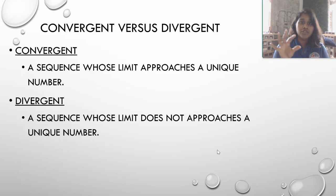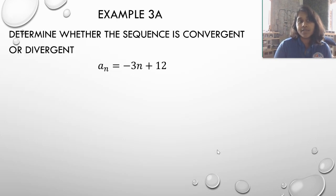So jumping right into convergence and divergence, a convergent sequence is a sequence whose limit approaches a unique number, and a divergent sequence is a sequence whose limit does not approach a unique number. Fun vocabulary, or we could see it for ourselves. So if I ask you to determine whether this following sequence is a convergent or divergent sequence, well, what would you do?